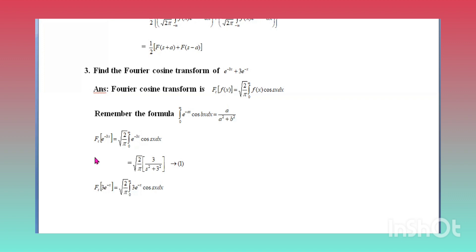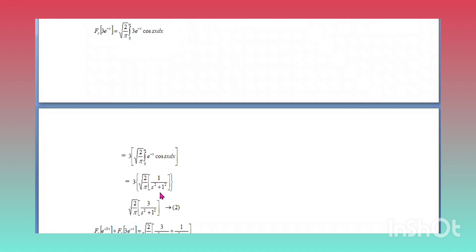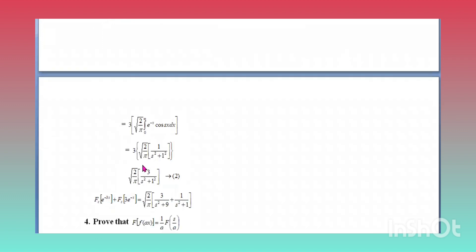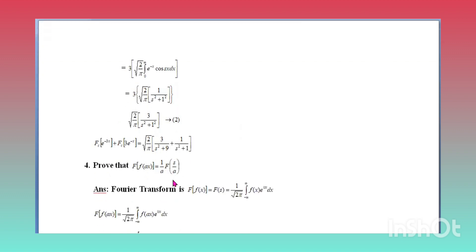Next, Fc{3e^(−x)} = 3·root(2/π) times the integral from 0 to ∞ of e^(−x)cos(sx) dx = 3·root(2/π)·[1/(s²+1)] = root(2/π)·[3/(s²+1)]. Combining both results: Fc{e^(−3x) + 3e^(−x)} = root(2/π)·[3/(s²+9) + 3/(s²+1)].